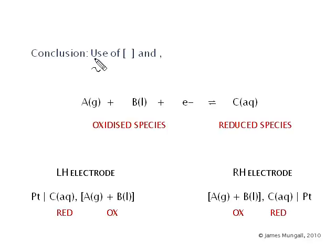So we can conclude with a general example, use of the square brackets and the comma. Essentially, the square brackets we'll put around if we've got more than one species on one side of the half equation, we'll use a comma in the place of the equilibrium.